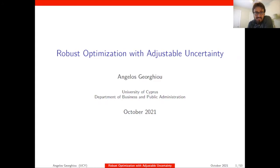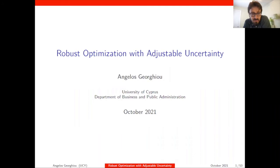Welcome back, everyone. It's my pleasure to introduce colleague and collaborator Angelos Georgiou. I've known Angelos for more than five or six years, since we met at ETH Zurich. He's currently Assistant Professor at the Department of Business and Public Administration at the University of Cyprus. Prior to that, he was at McGill University as Assistant Professor of Operations Management in the Desautels Faculty of Management. He has been involved in methods for stochastic and robust optimization, with a special interest in energy problems, operations management, and healthcare.